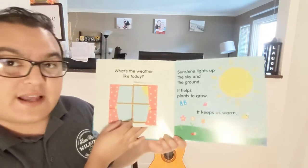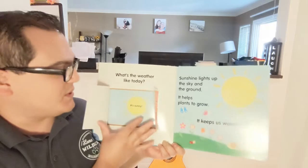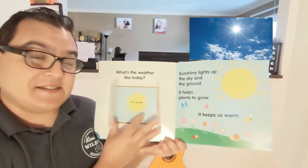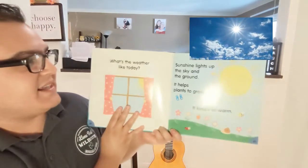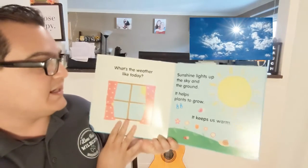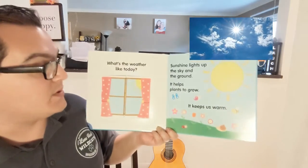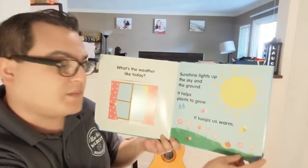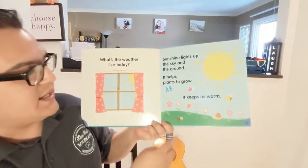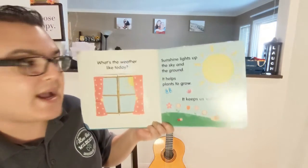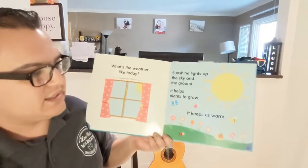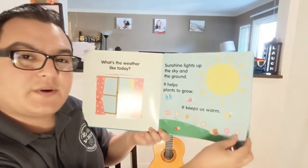What's the weather like today? Let's open the window. It's sunny! Sunshine lights up the sky and the ground. It helps plants to grow and keeps us warm. Look at the flowers growing! You can see a ladybird crawling on the grass, some butterflies, a bee, and even a snail.